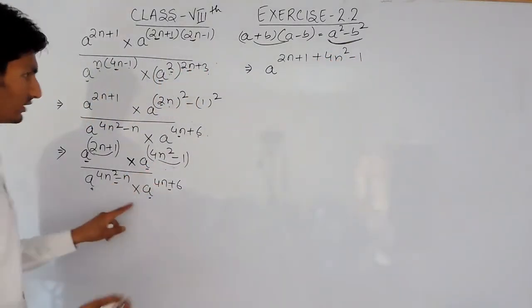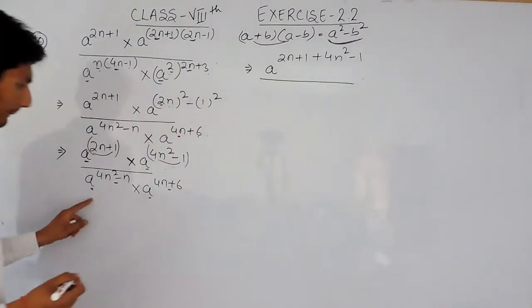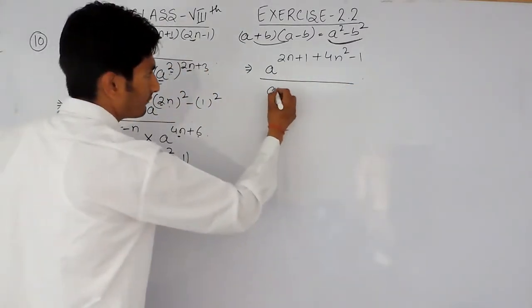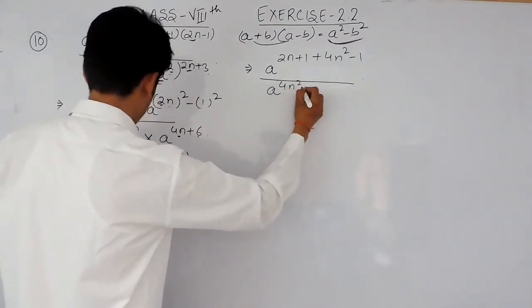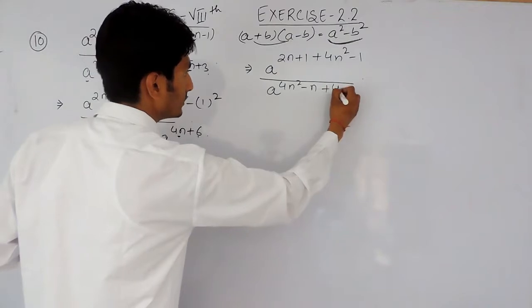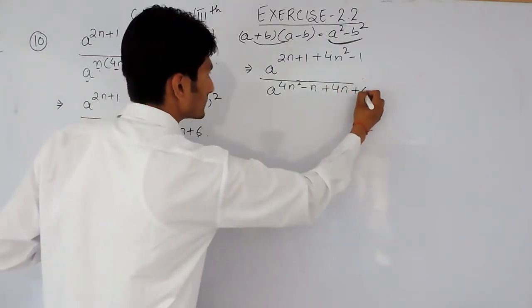Similarly in the denominator, the base is same, we have to add the power, so this is 4n square minus n plus 4n plus 6.